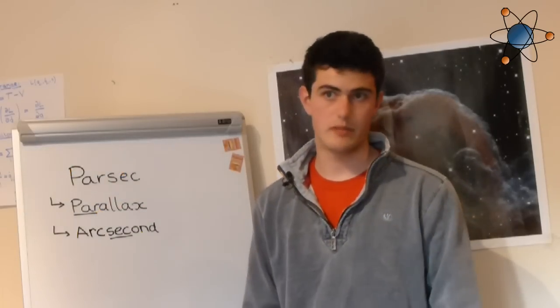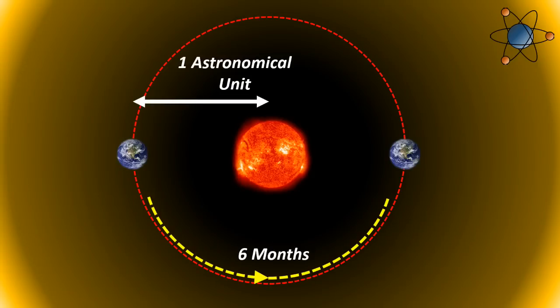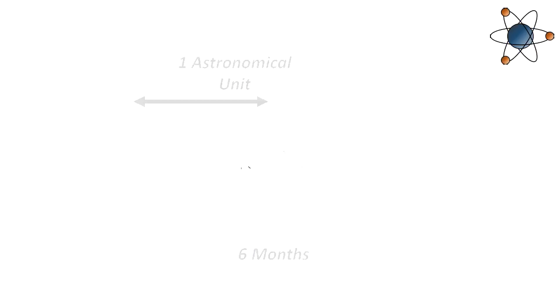The Earth in the meantime has moved by a distance of two astronomical units, which is the distance between us and the Sun. So that's parallax.